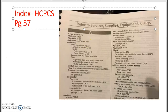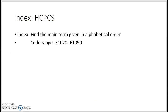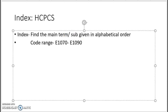Remember, the index is always used to find the main term, given in alphabetical order. The index will give you a code range — for example, E1070 to E1090. That's all we're going to find in our index. The main term might be 'wheelchair,' and then subterms will narrow down what kind of wheelchair it is.